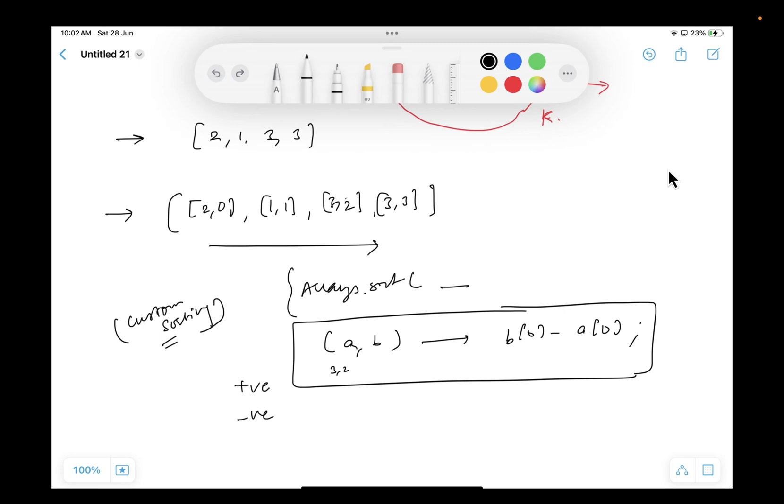this is, let's say, this is A and this is B. So B[0] minus A[0], 3 minus 2 which is 1. 1 means positive, it means swap it. Swap these two items. This will come here, this will come here. So this is how the sorting, custom sorting works internally. So you just have to sort them in decreasing order on the basis of their first values.